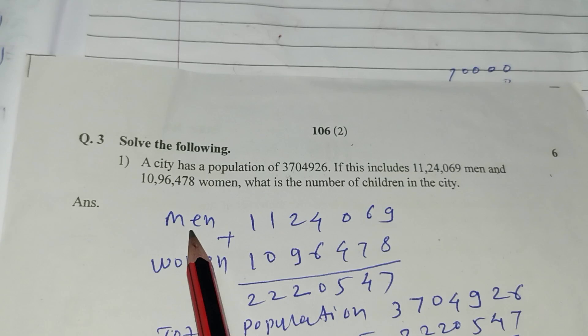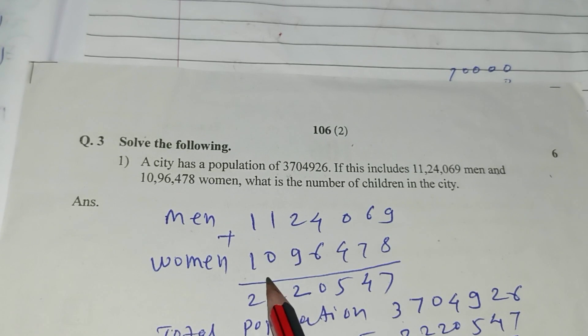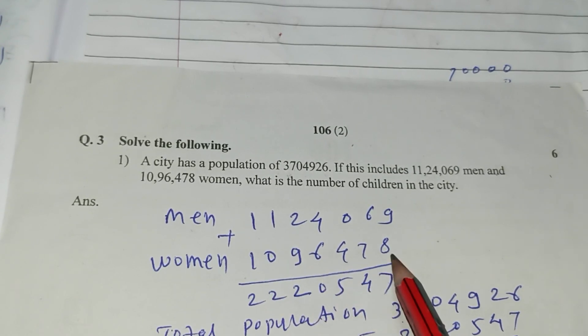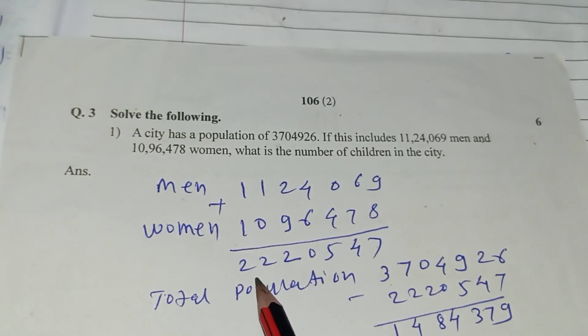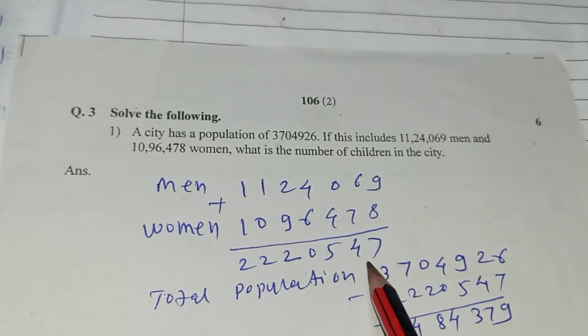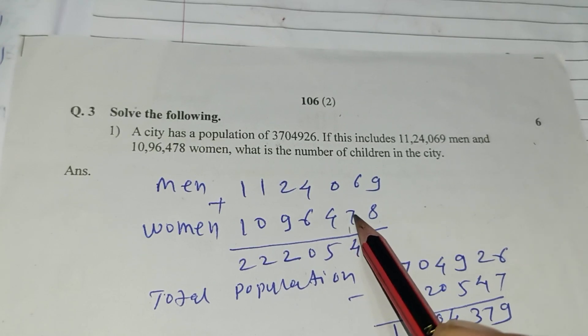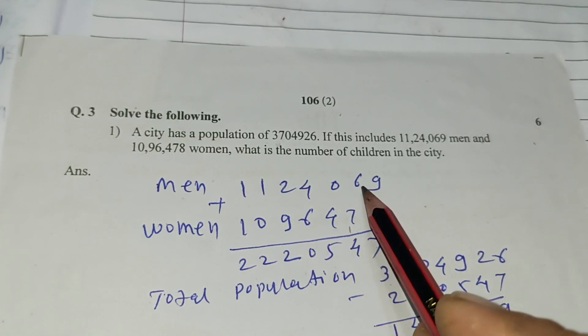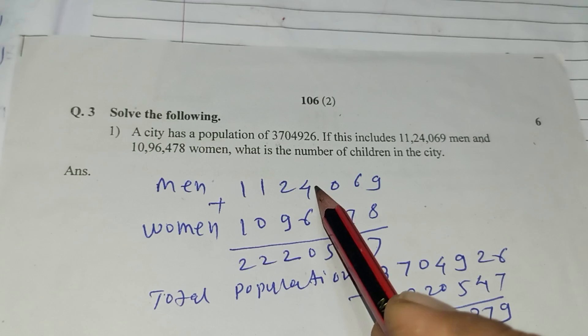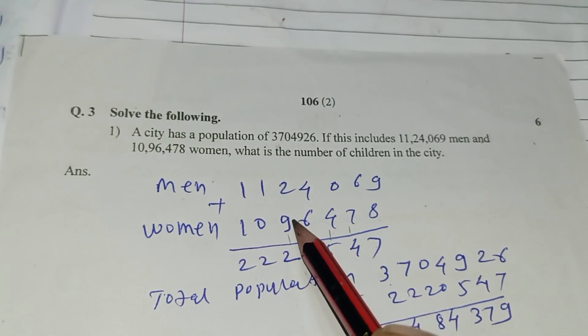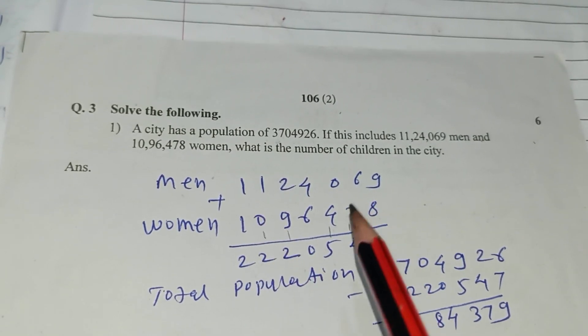How many men 11,24,069, how many women 10,96,478, total addition men and women. 22,20,547. 9 plus 8, 17, reminder 1. 6 plus 7, 14, reminder 1, 4, 1, 5. 7 plus 4, 10, 1. 9 plus 1, 10 plus 2, 12. 1, 1, 2, 1, 2.